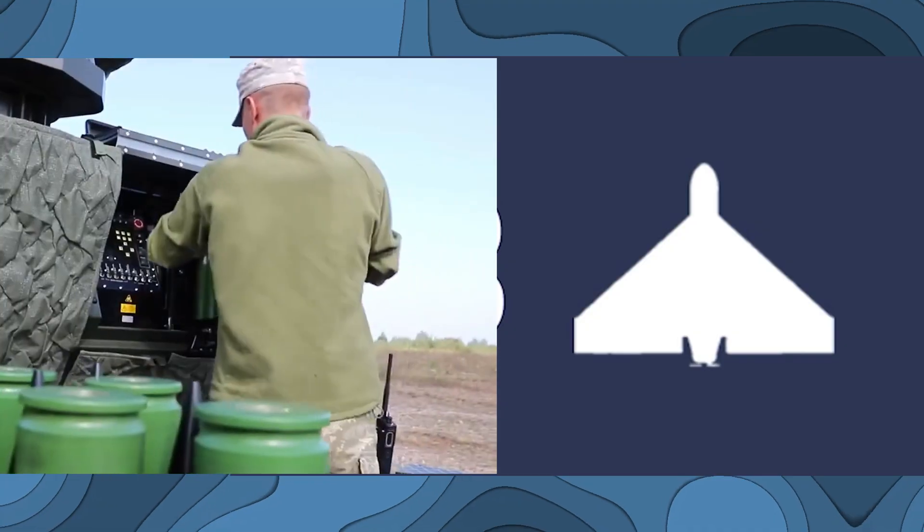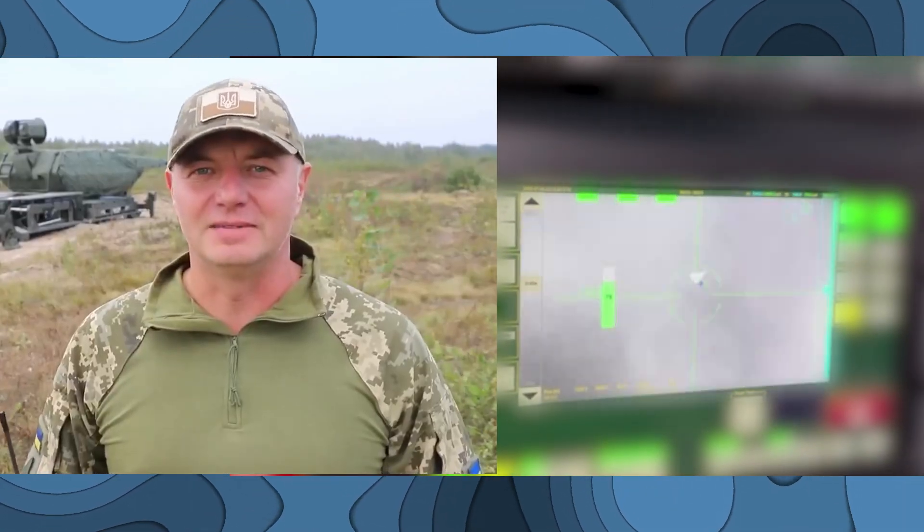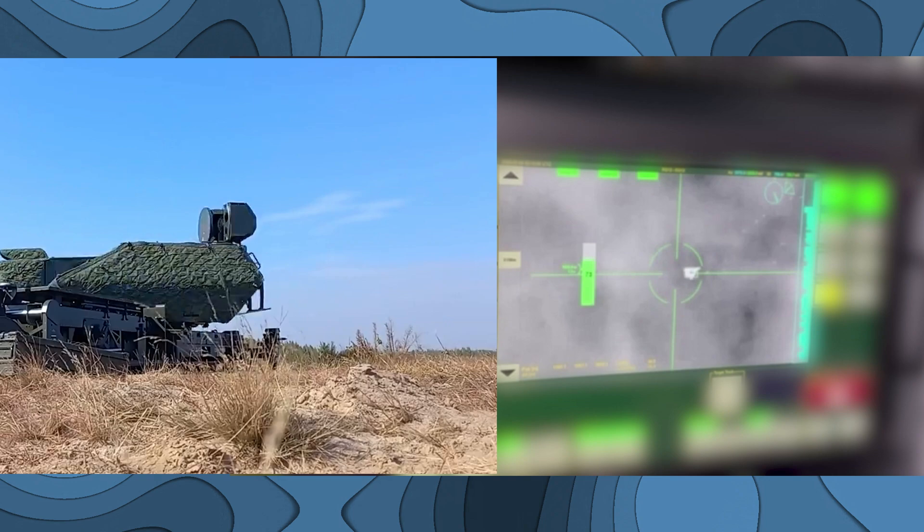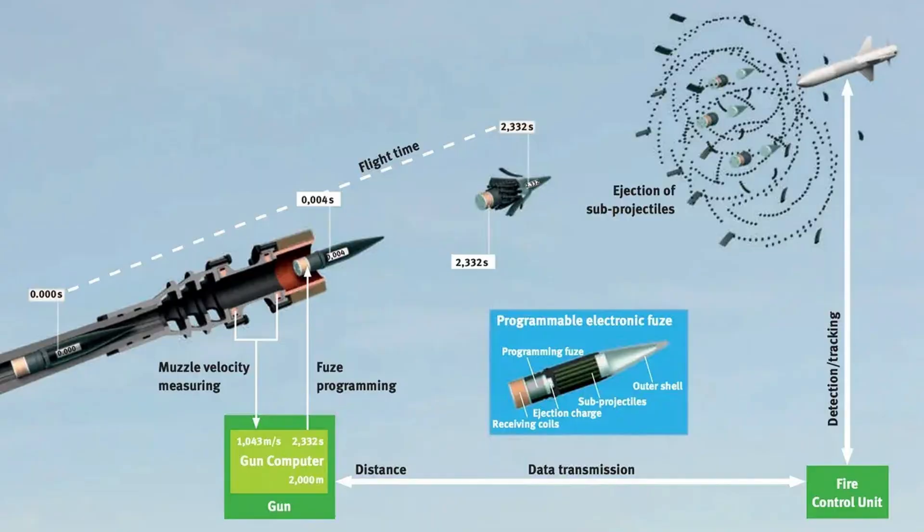It relies on an advanced 35mm automatic cannon that fires programmable ammunition, called AHEAD, which stands for Advanced Hit Efficiency and Destruction. These are high-tech rounds that explode just before reaching the target, scattering a cloud of metal fragments that cut through drones like paper.